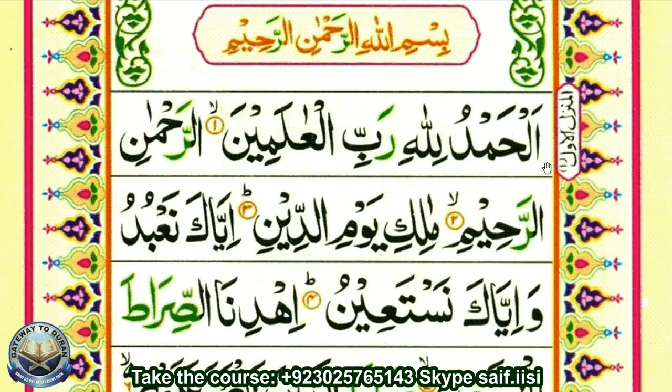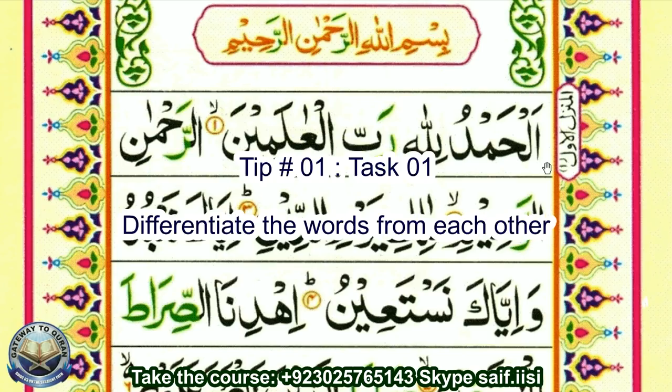Some tips on how you can make it easy for you to understand the translation of the holy Quran. Many of the things you understand and some things you memorize. First tip: writing. Writing the words in Arabic is different than writing the words in English. In English there are spaces between the words, but in Arabic there are no spaces.